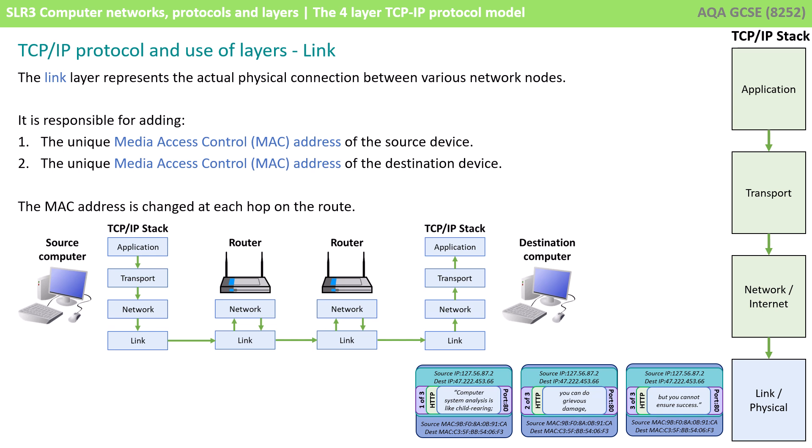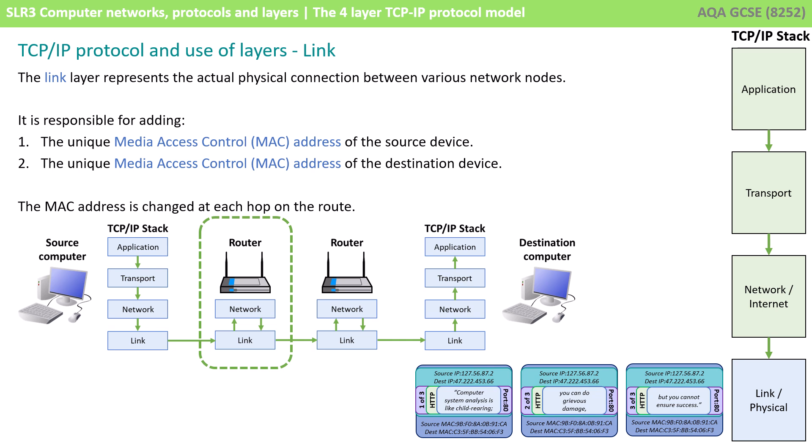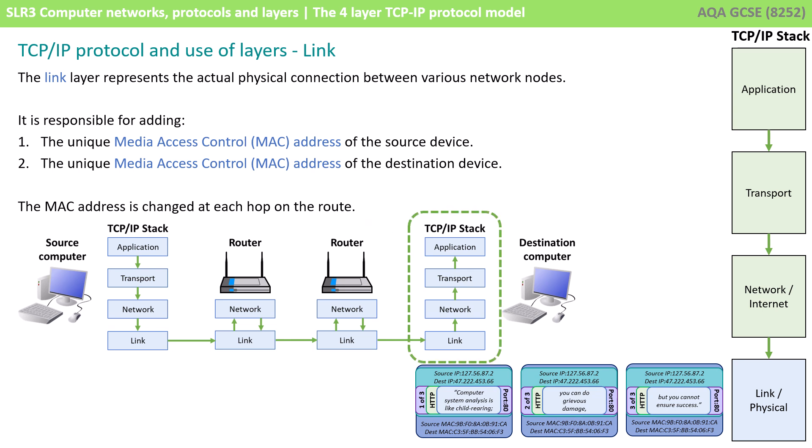These packets can now be sent off. We've reached the bottom of the link layer and the packet heads towards the first router. The router will strip off the outer layer of the packet and pass it up to the network layer. The destination IP is still set to the location of the final computer, but the current router needs to decide where this packet needs to go next — so it adds its own MAC address and destination address, wraps it back up and passes it on. When it eventually arrives at the destination computer, the packet moves up through the destination computer's TCP/IP stack and each layer is removed one at a time, until eventually the destination computer sees the original message.